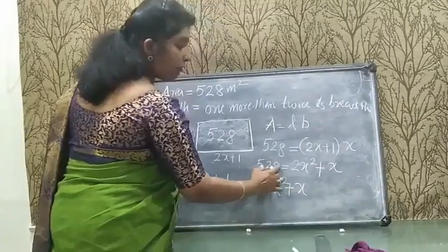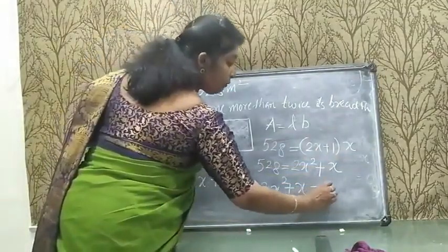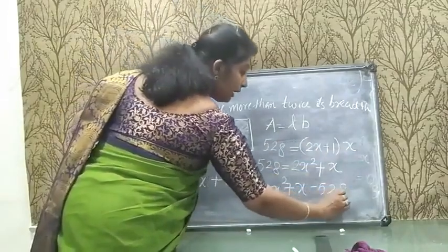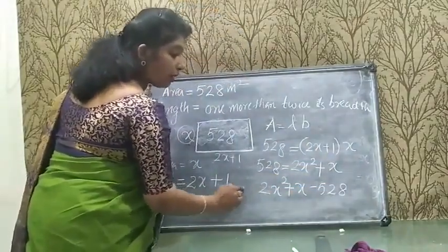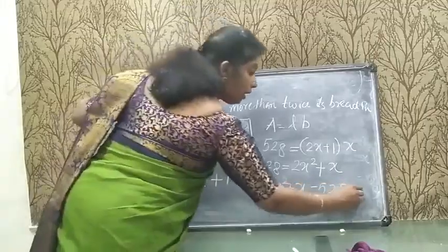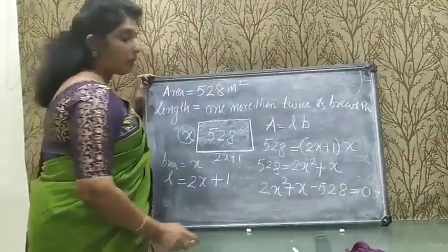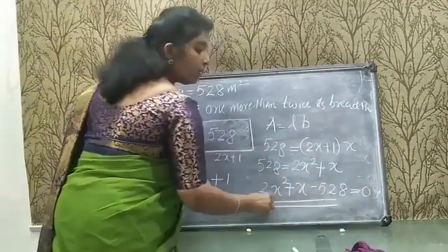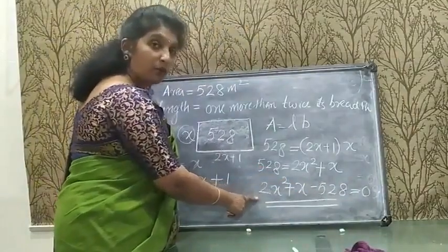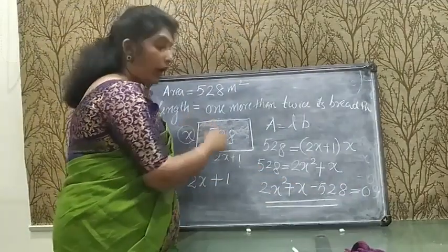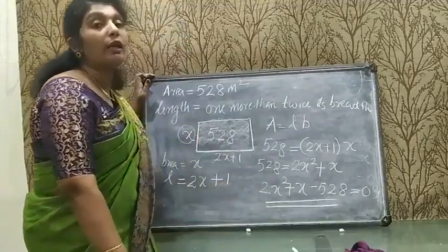Now I will bring 528 to the right-hand side, giving 2x² + x − 528 = 0. This is the general form of a quadratic equation, so the given situation is expressed as a quadratic equation.